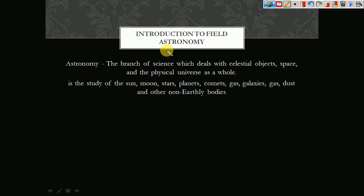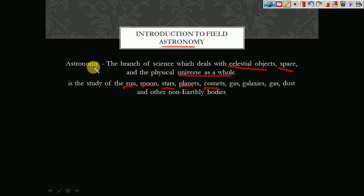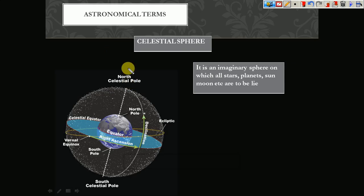Module 3 is an introduction to field astronomy. Astronomy is a branch of science which deals with celestial objects. Celestial objects include the sun, moon, stars, planets, comets, and so on. The study of space and the physical universe as a whole is called astronomy.